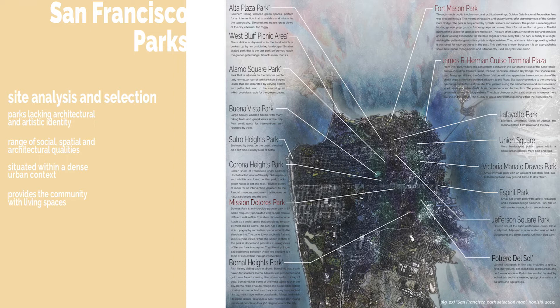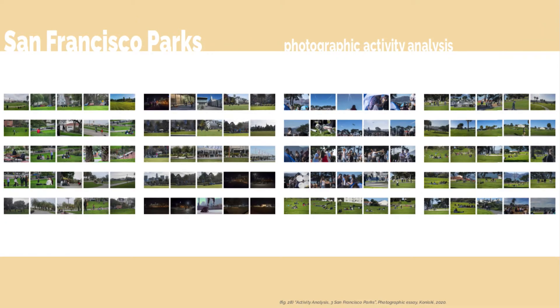As I pulled together a catalog of parks to possibly intervene within, I created a set of rules. I was looking for parks that lacked architectural and artistic identities, parks that range in social, spatial, and architectural qualities, parks that are situated within a dense urban context, and parks that provide the local community with living spaces. I settled upon three parks: Fort Mason Park in the Marina, the James Herman Cruise Terminal in North Beach, and Mission Dolores Park in the Mission.